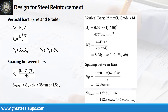Given steel ratio equals 2% and assumed column diameter equals 520 mm, the area of steel is 4,247.43 square millimeters and the number of vertical bars for 25 mm bar is 9. The spacing within bars is 137.88 mm and clear spacing between bars is 112.88 mm.